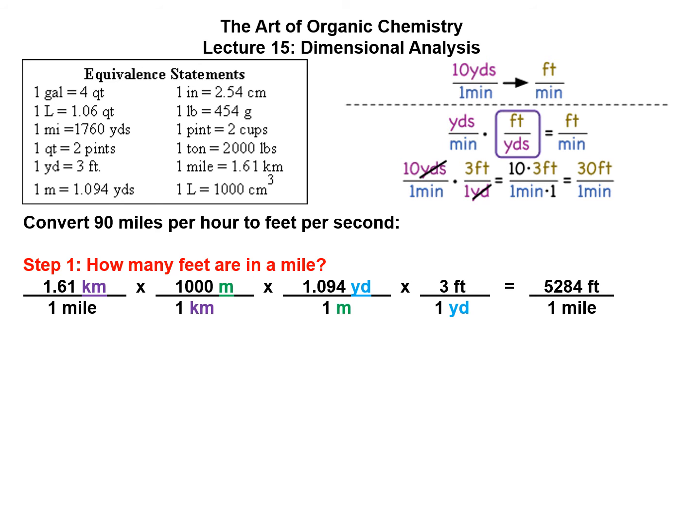So if you had to convert 90 miles per hour to feet per second, this problem is a little more complex. Your first step is to convert how many feet are in a mile. So we look at the conversion chart, and we know there's 1.61 kilometers per mile, 1,000 meters per kilometer, 1.094 yards per meter, and 3 feet per yard.